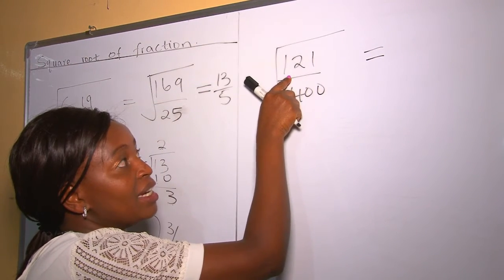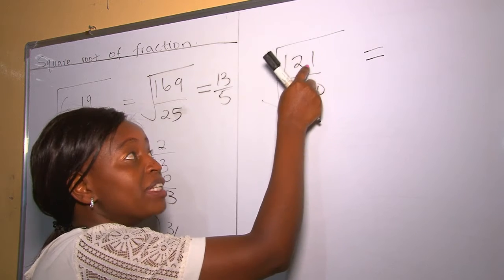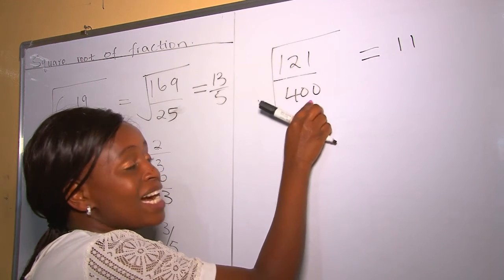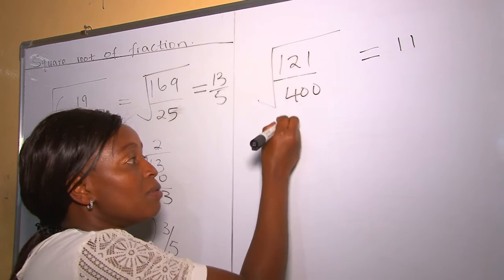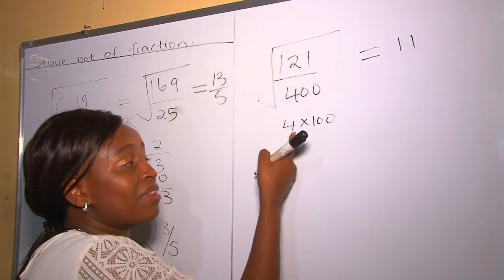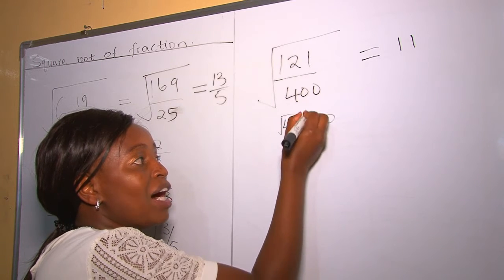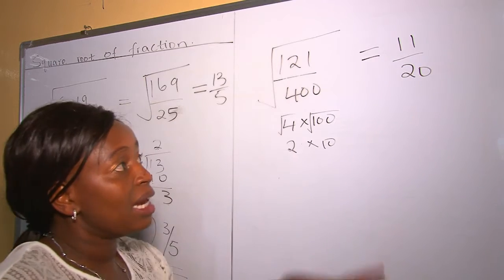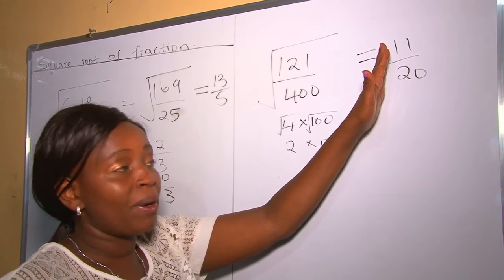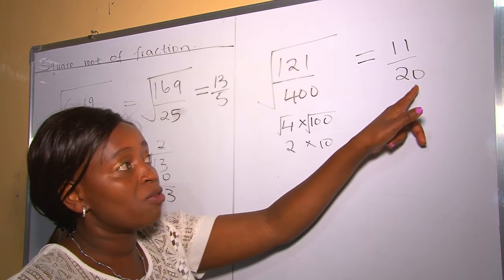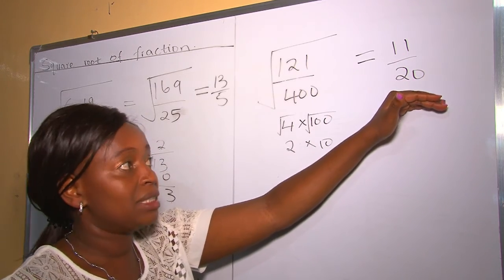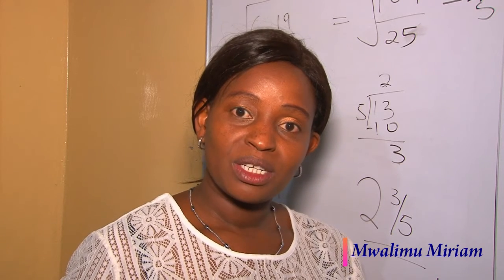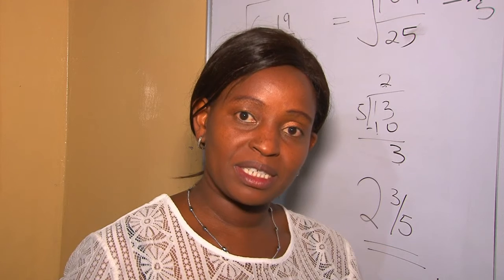Let's do another example. The square root of the numerator 121 is 11, because 11 times 11 is 121. For the denominator 400, we split it as 4 times 100: square root of 4 is 2, square root of 100 is 10, so 2 times 10 equals 20. Our answer is 11 over 20, which is a proper fraction so we leave it as is. I wish you the best — kindly subscribe, share, and leave a comment. Remember to practice — practice makes perfect. Thank you.